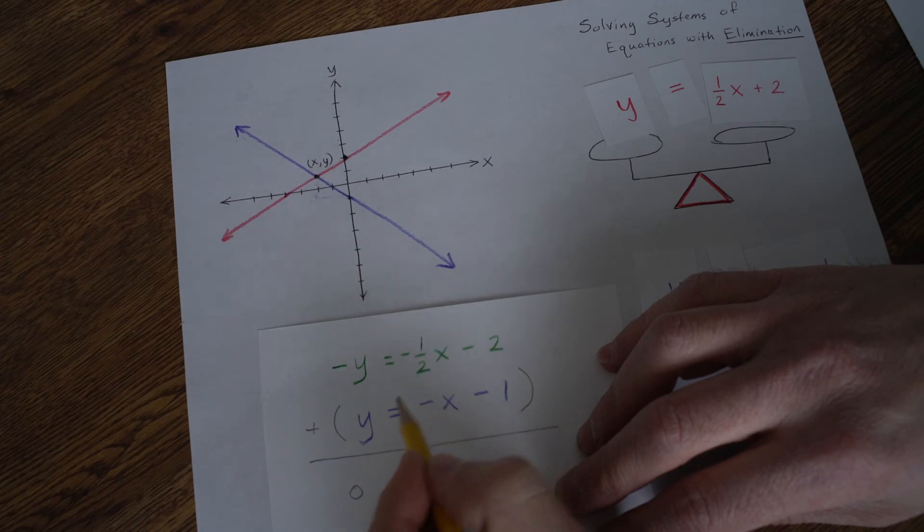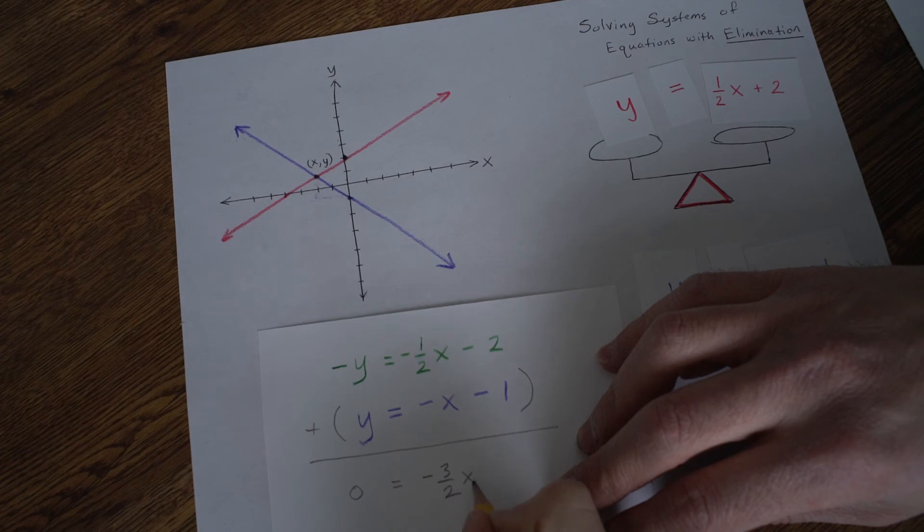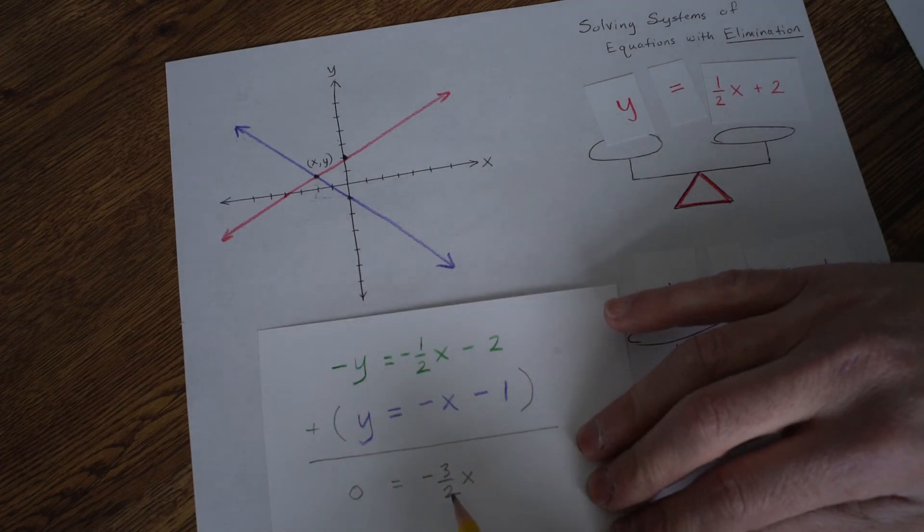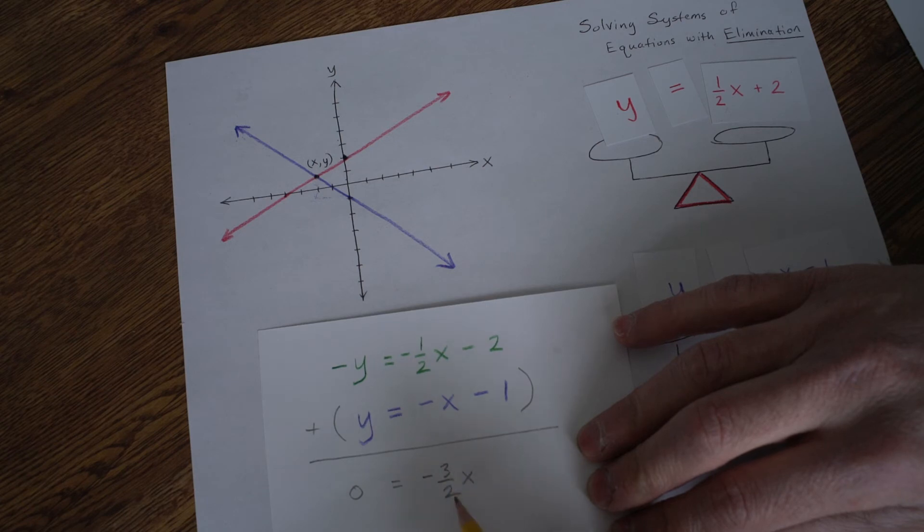Negative y plus y is 0y. 0y is just 0. So just put a 0 here. Negative 1 half plus negative 1. This is a ghost one here. It's negative 3 halves.